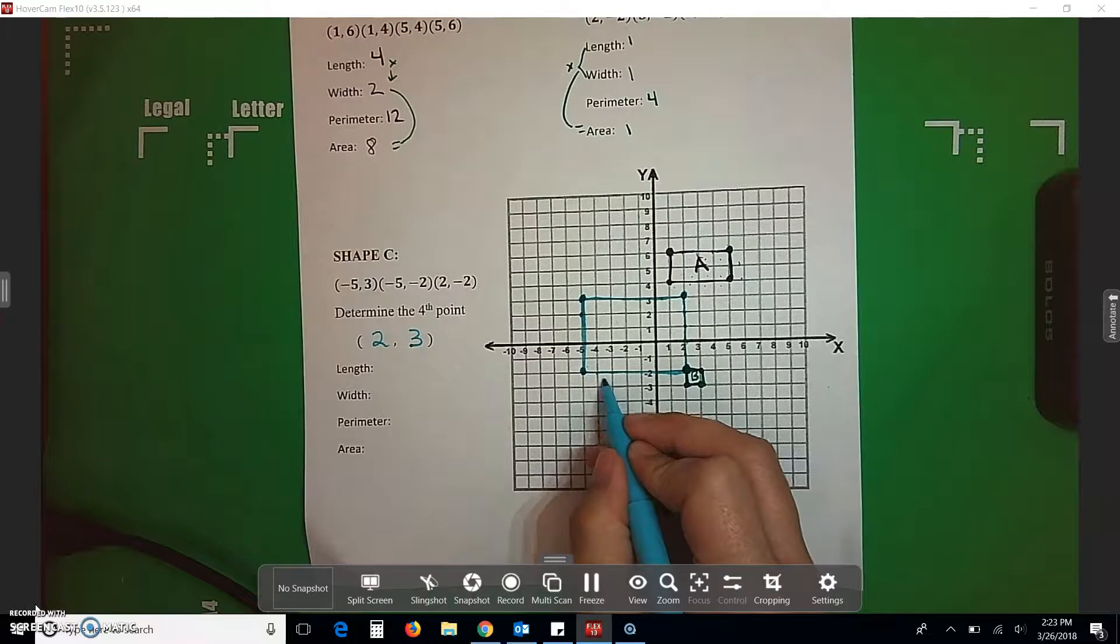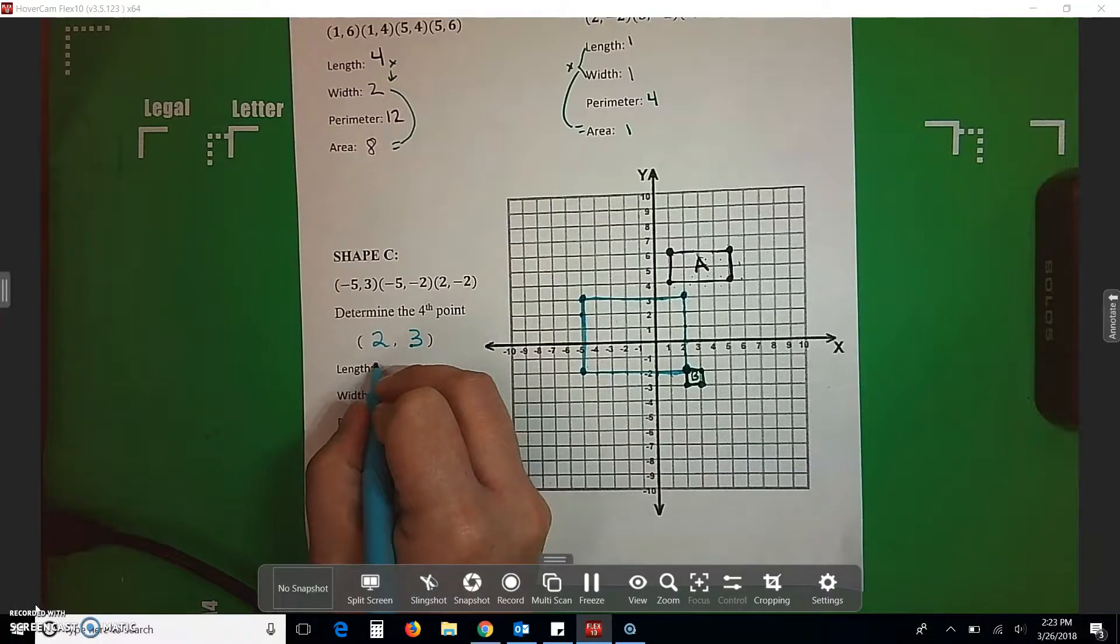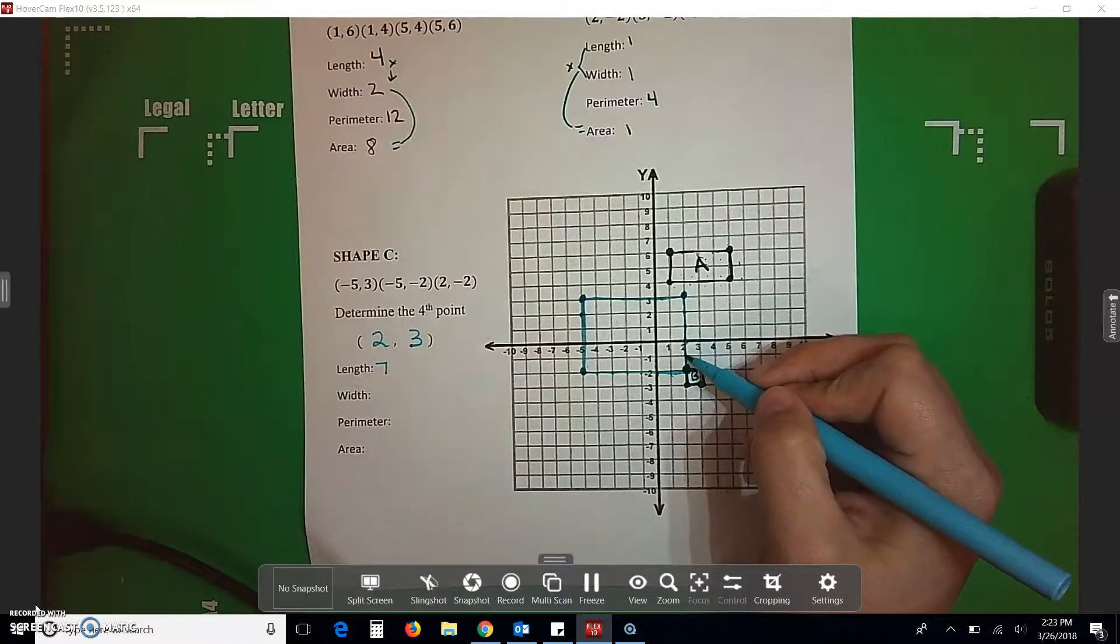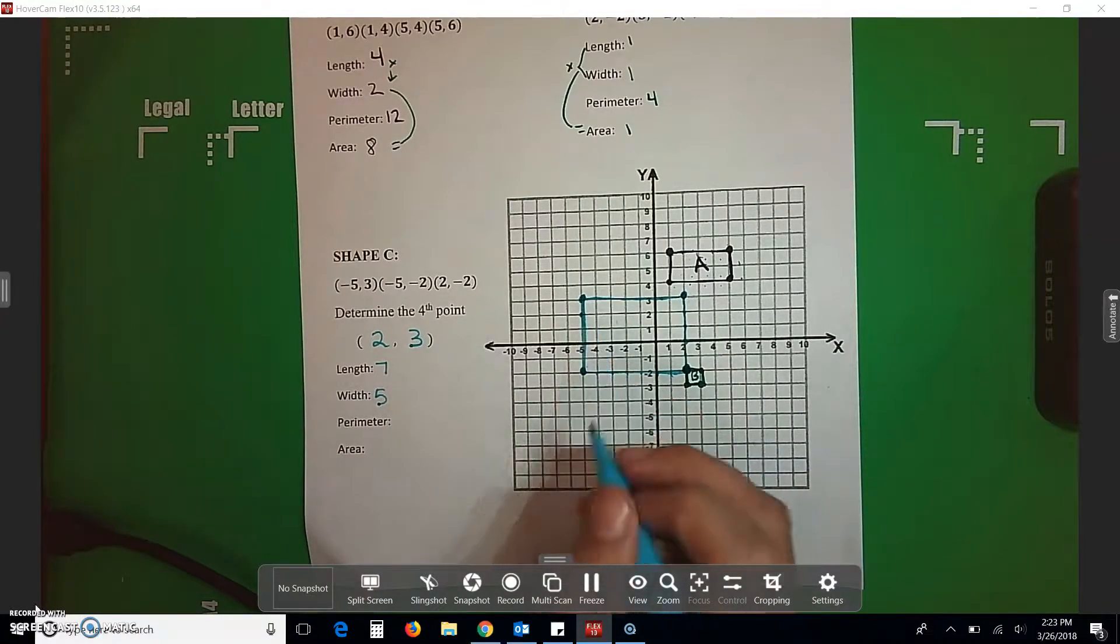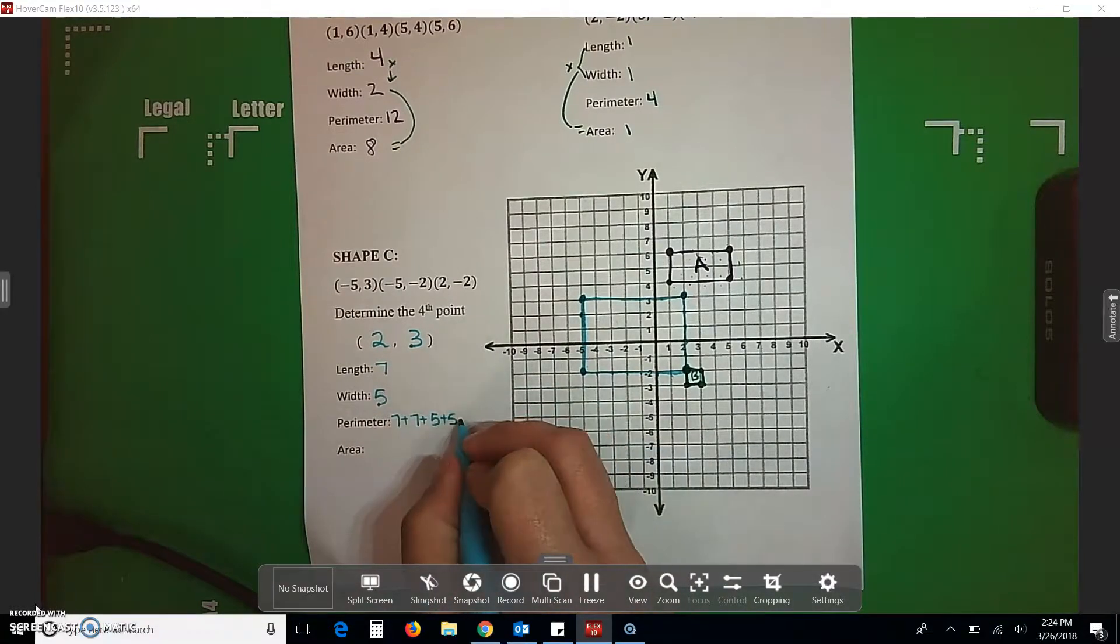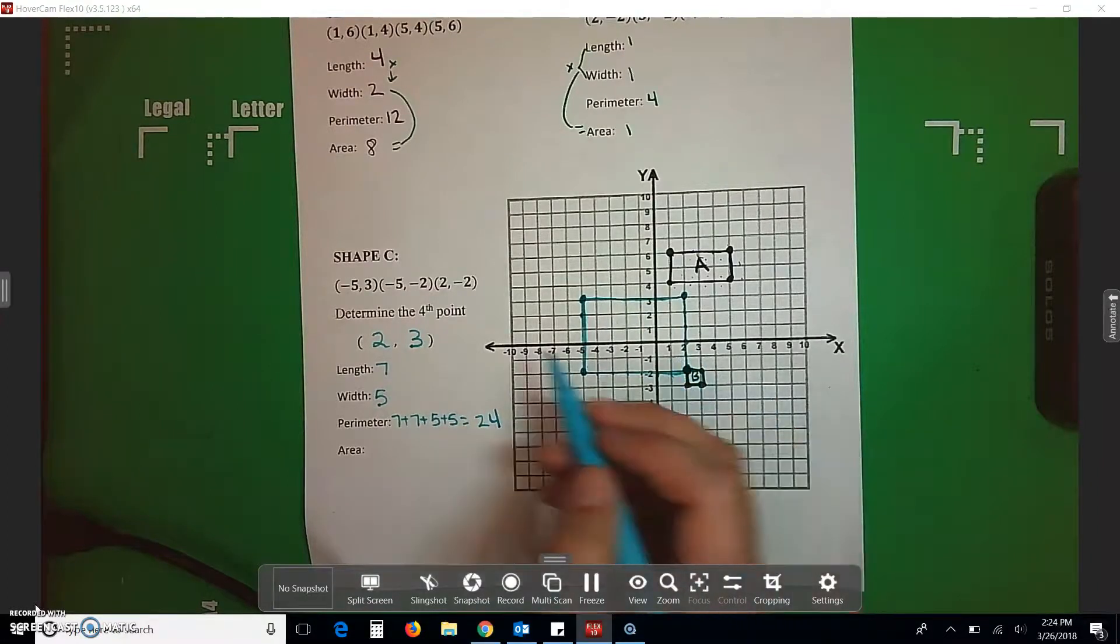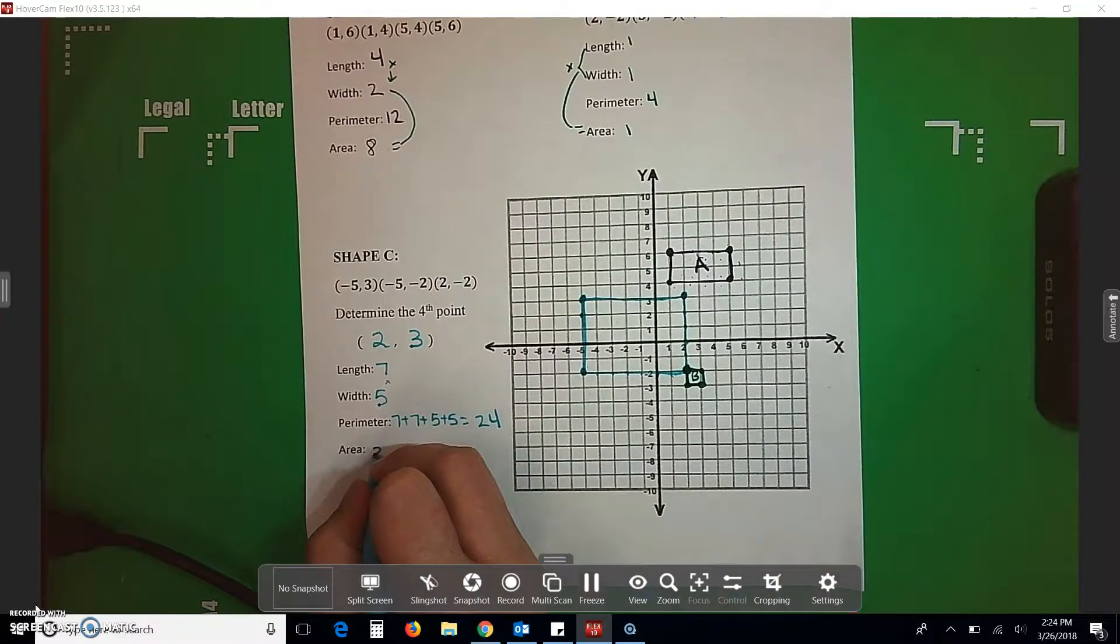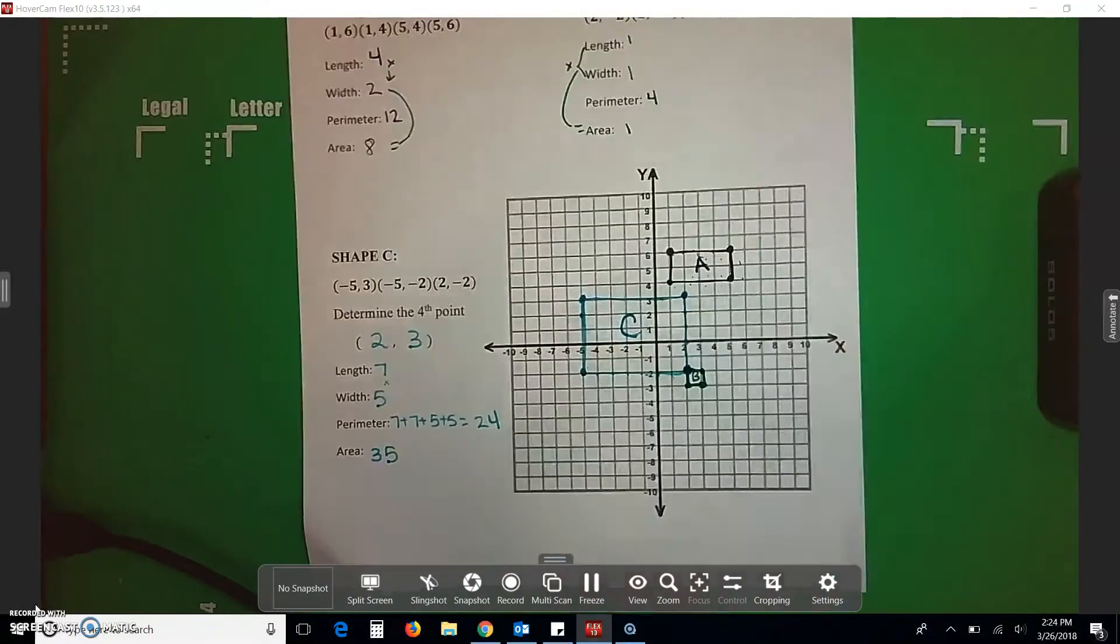My length is 1, 2, 3, 4, 5, 6, 7. My width is 1, 2, 3, 4, 5. Now, my perimeter, you can go and count all the way around or you can do 7 plus 7, which is my length, plus 5, plus 5 for my width. My perimeter is going to be 24. My area, I can count all the little boxes or I can just do 7 times 5 to get an area of 35 and then I've got to make sure that I label my box. Okay, so this is shape C.